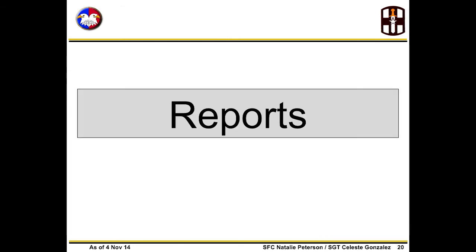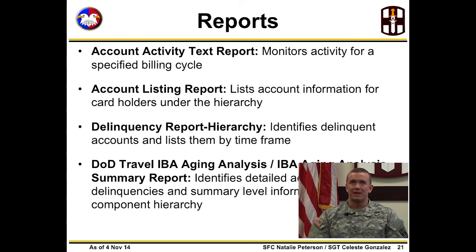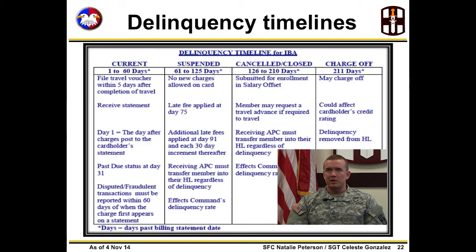Next, we will cover reports. Citibank offers the following reports: the Account Activity Text Report, which monitors activity for a specified billing cycle; the Account Listing Report, which lists account information for cardholders under the hierarchy; the Delinquency Report Hierarchy, which identifies delinquent accounts and lists them by time frame; and the DOD Travel IBA Aging Analysis Summary Report, which identifies detailed account delinquencies and summary level information by component hierarchy. The Delinquency Timeline is presented for reference and can be found in the 807th 37-1 FMR, Chapter 7.